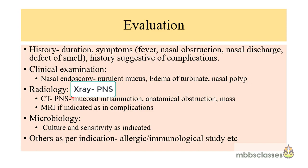For radiological investigation, X-ray of the paranasal sinuses is often sufficient, but CT PNS is done to categorize the disease, assess extent, and plan surgery. CT reveals mucosal inflammation, anatomical obstruction, and any associated masses. MRI is indicated if intracranial complications such as meningitis or cerebral abscess are suspected. Microbiology with culture and sensitivity is important as indicated. Allergy and immunological studies should be performed if allergic manifestation or chronic immune disorder is suspected.